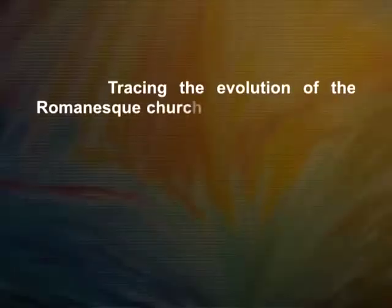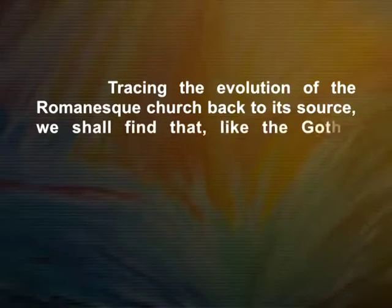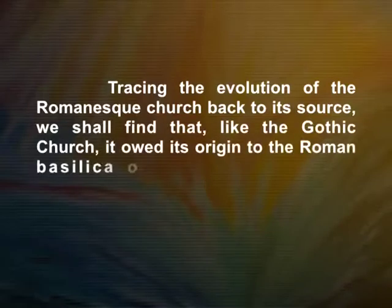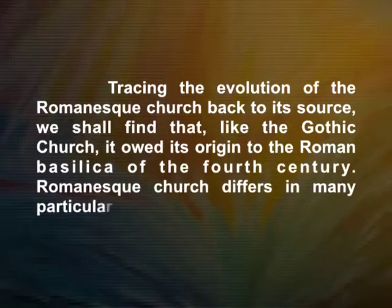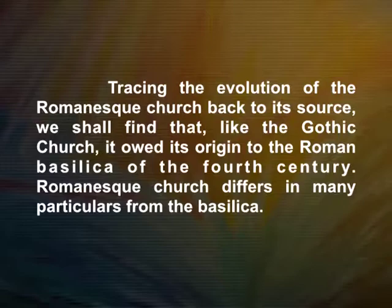Tracing the evolution of the Romanesque church back to its source, we shall find that, like the Gothic church, it owed its origin to the Roman basilica of the 4th century. The Romanesque church differs in many particulars from the basilica: it was built in the form of a Latin cross, the roof was vaulted, and the windows generally round-headed. Finally, it had as a rule one or more towers forming a corporate part of the building. However, these modifications were not at once adopted — we can trace their evolution down to the middle of the 12th century and even later. But the general idea was the same: a central nave lighted laterally, ending in an apse, and side aisles, generally two in number.